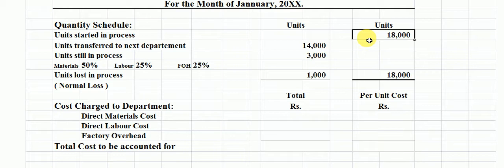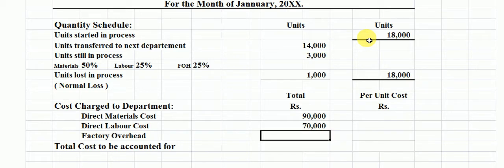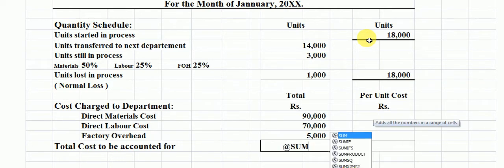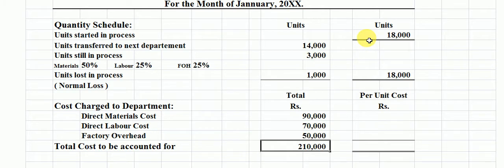The second section is cost charged to department. The material cost is 90,000 rupees, the labor cost is 70,000 rupees, and the factory overhead is 50,000 rupees. These are the manufacturing costs: direct material cost, direct labor cost, and factory overhead cost. Adding these figures, the total cost to be accounted for is 2,10,000 rupees.